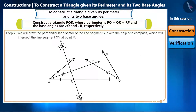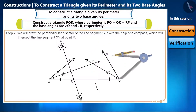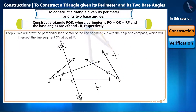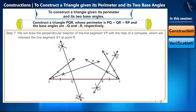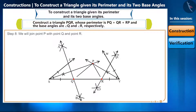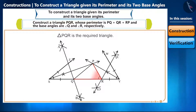Step 7: similarly, draw the perpendicular bisector of line segment YP with the help of a compass, which will intersect line segment XY at point R. Step 8: join point P with point Q and point R, and thus we have constructed triangle PQR when we had information about its perimeter and the base angles.